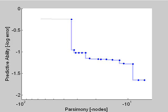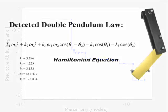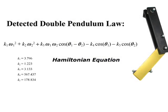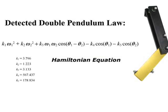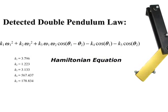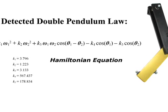The equation that the algorithm found at this point is the Hamiltonian equation of the double pendulum. This equation represents the physical law of energy conservation, which states that the potential and kinetic energies of the system always add to a constant value.